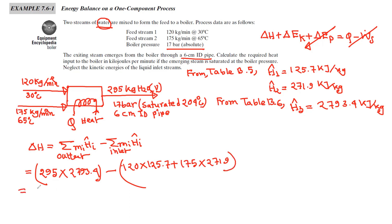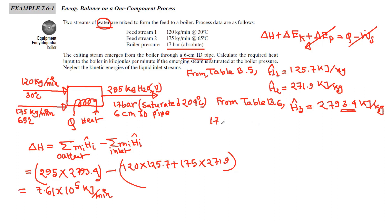Let me recalculate the utility: approximately 6.7 × 10^5 joules per minute. The calculation is correct in the equation. Also from Table B6, I want the specific volume for the steam exit stream — specific volume is 0.1166 meter cubed per kilogram.